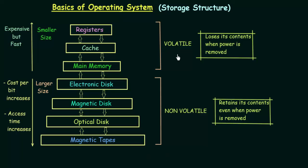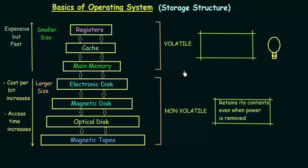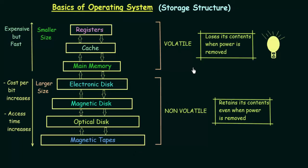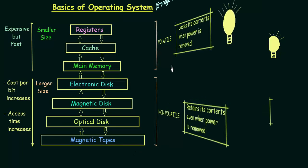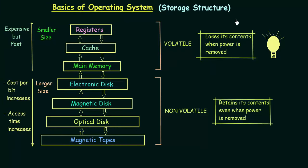To summarize: volatile means when power supply is present, the device retains its data, but when power is removed, contents are erased. In non-volatile, whether the power is there or not, its contents are always retained. These are the key things you should know about storage structure and storage devices, which are basics of your operating system. We understood the hierarchy, main memory, secondary memory, and their features.